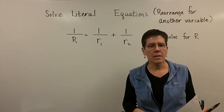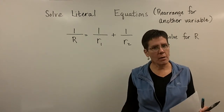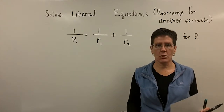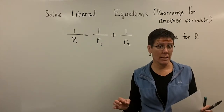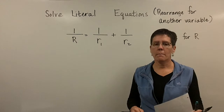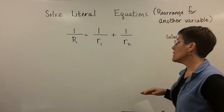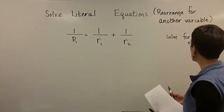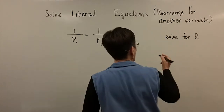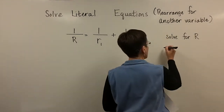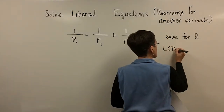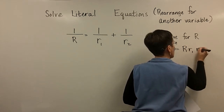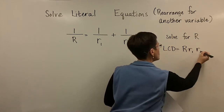In physics, we use subscripts all the time: temperature at time 1, volume at time 1, pressure at time 1 — so we call it T sub 1, V sub 1, P sub 1. Sometimes we use sub-zeros. I want to solve for the capital letter R, so my LCD in this problem is capital R, R sub 1, and R sub 2.